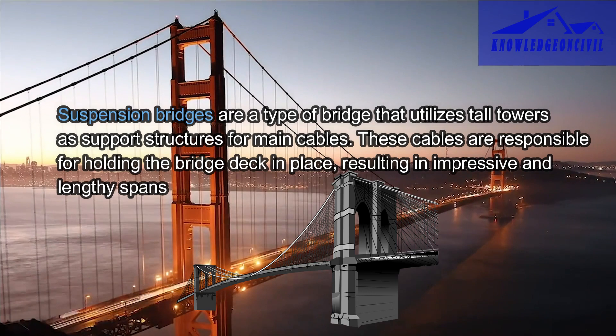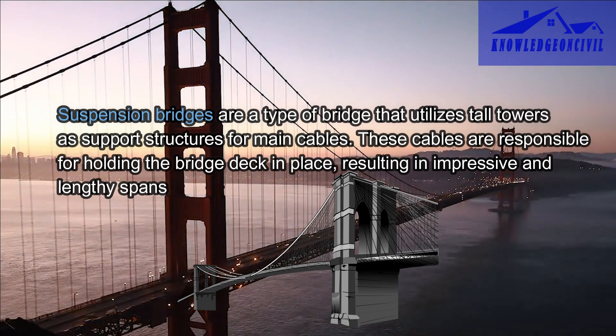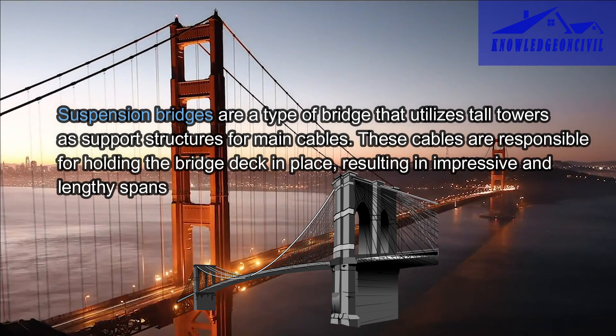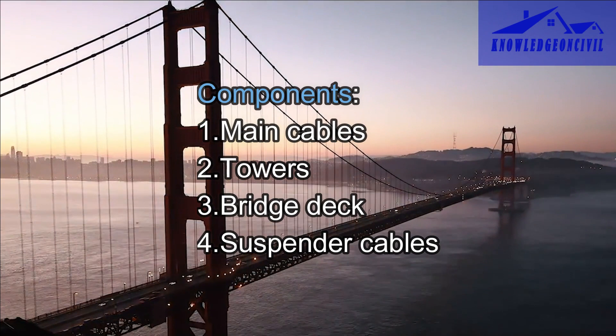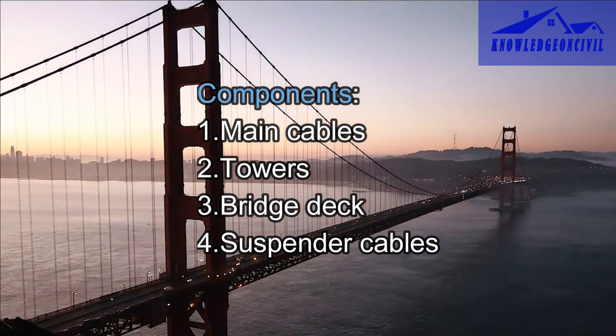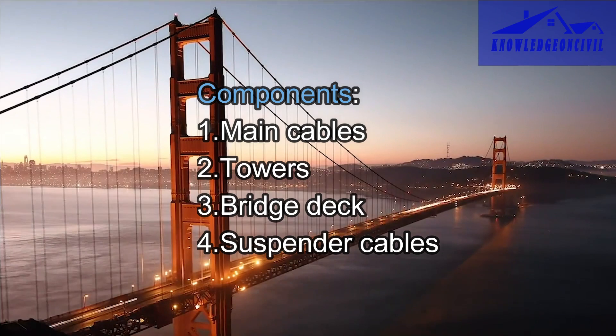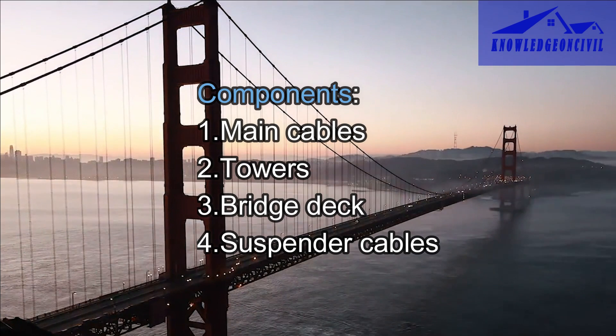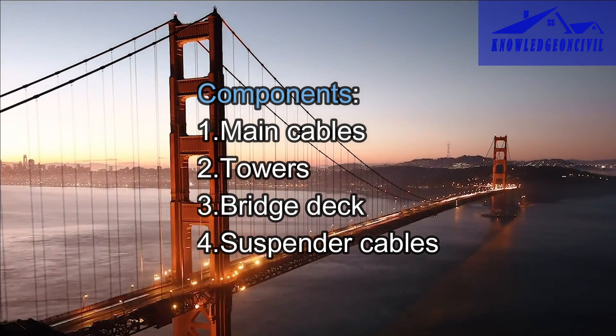Suspension bridges utilize tall towers as support structures for main cables. These cables are responsible for holding the bridge deck in place, resulting in impressive and lengthy spans. The main cables are large, strong cables that run between the towers and provide primary support for the bridge deck. Tall towers or pylons are erected at each end and serve as anchor points for the main cables — the height of these towers determines the vertical clearance beneath the bridge.